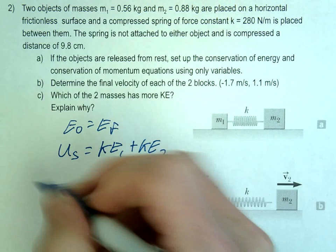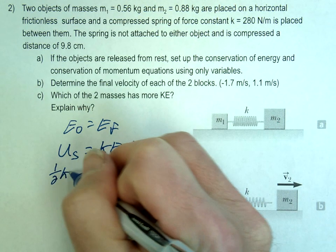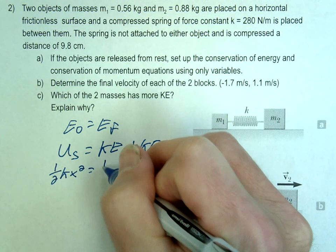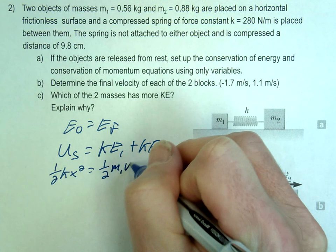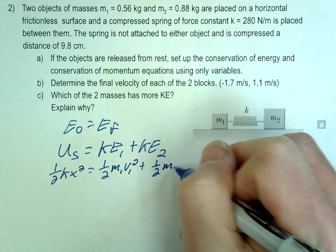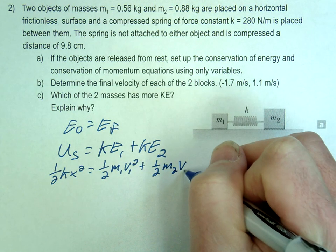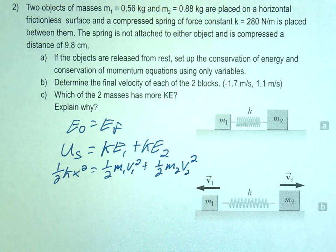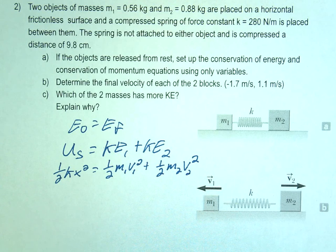And if we put this in equation form, we should have 1/2 Kx² equals 1/2 M1 V1² plus 1/2 M2 V2². That's our setup for the energy equation. Then we have momentum as well.